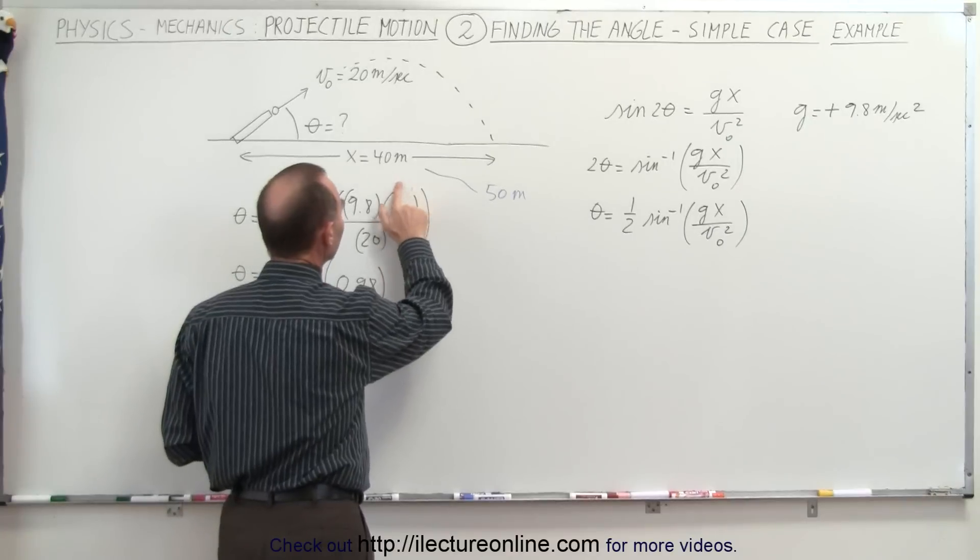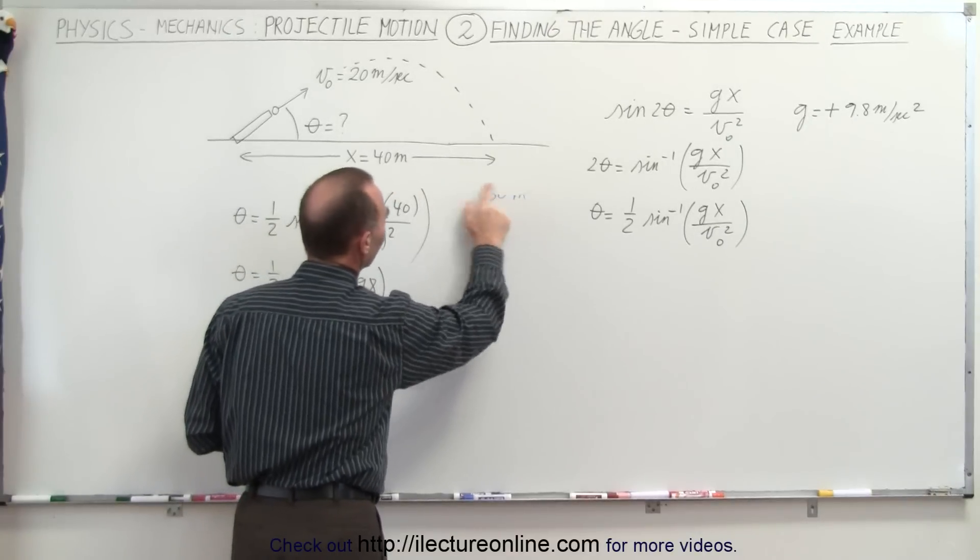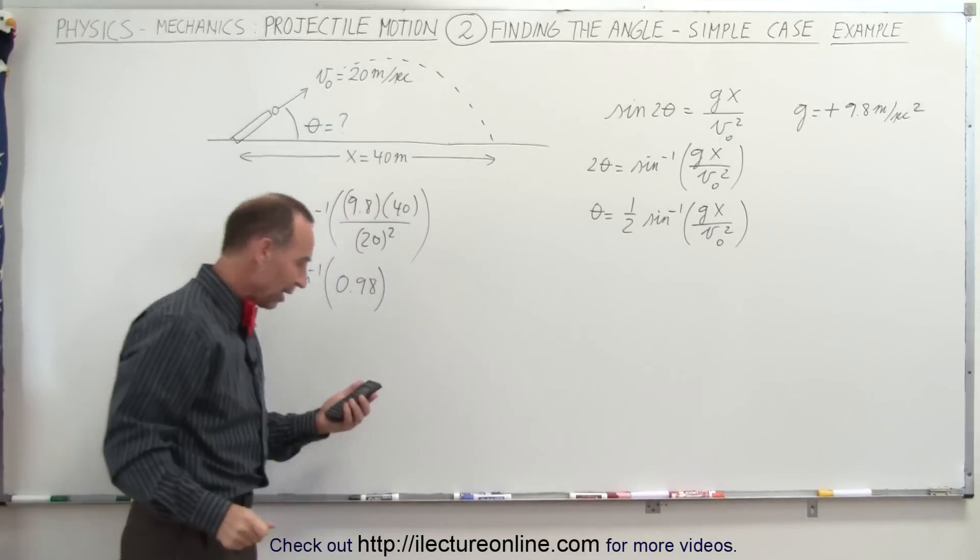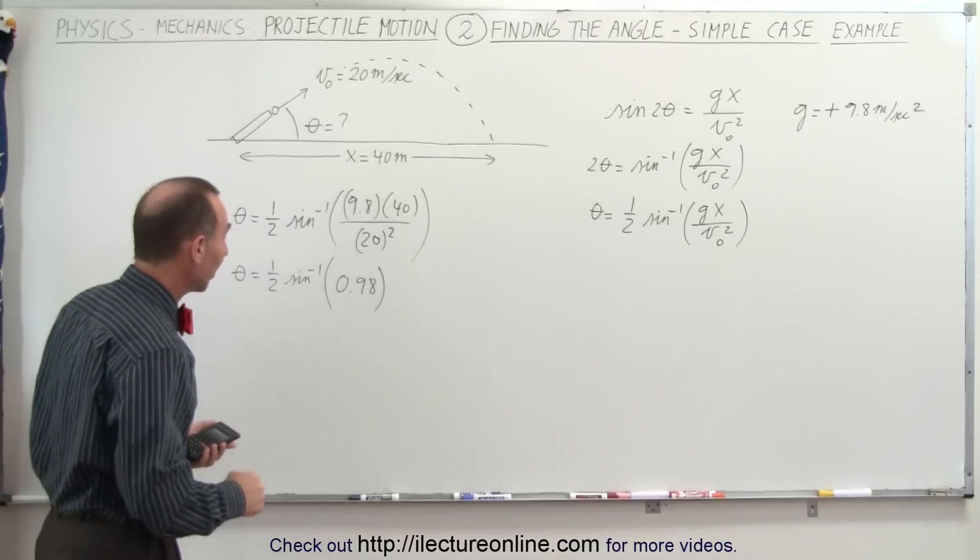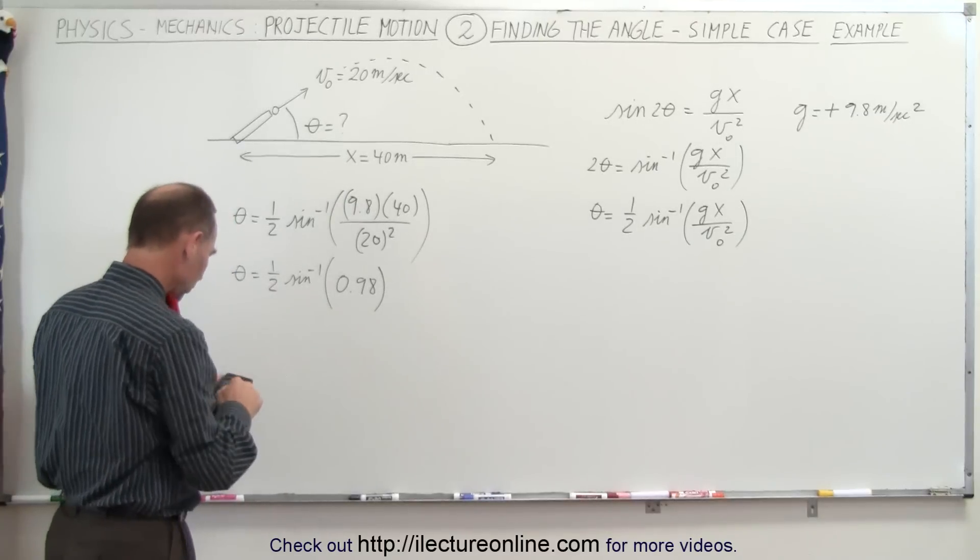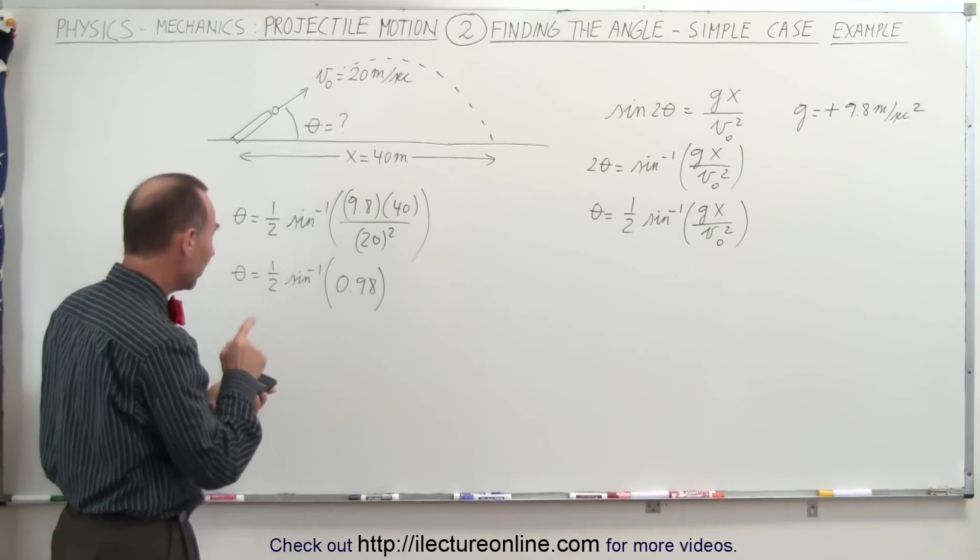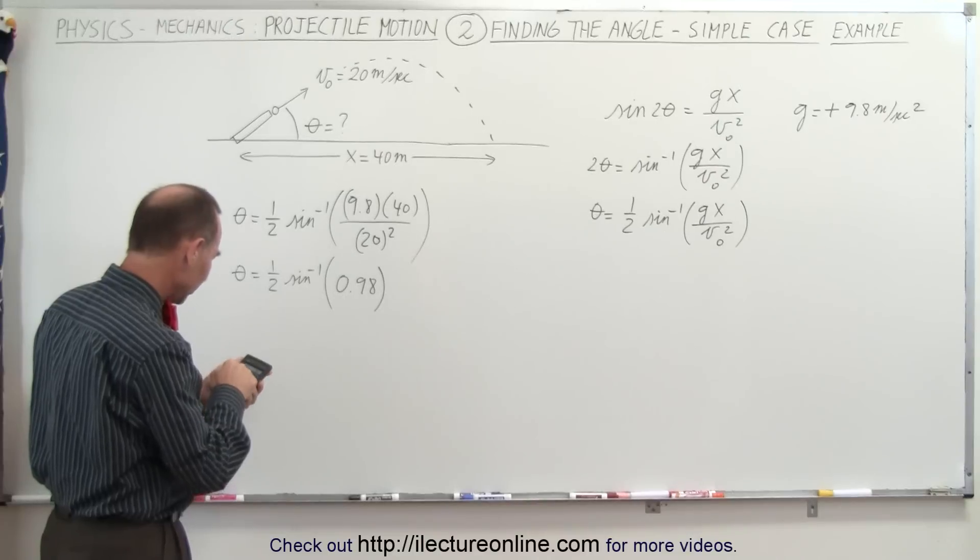So that's always something really good to keep in mind. Of course, in this case, we're not going to take the range of 50, because we want to see what the answer looks like. So now what we're going to do is take the arcsine of 0.98, so the inverse sine.